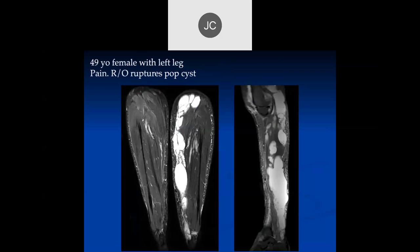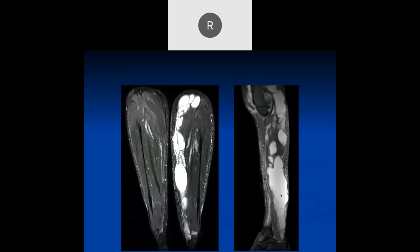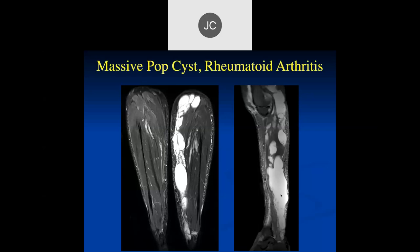In a 49-year-old with left leg pain and a ruptured popliteal cyst, there is extensive fluid with debris — a very large popliteal cyst. Rupture cannot be excluded, but the cyst is confirmed. This patient had long-standing rheumatoid arthritis resulting in a massive popliteal cyst due to the chronic inflammatory disease.